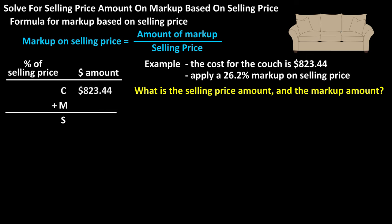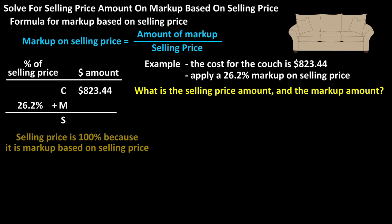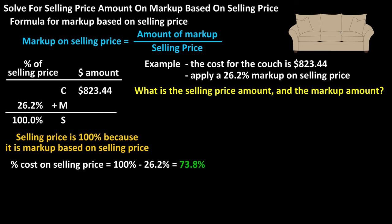We know the cost is $823.44, and we know the markup on selling price is 26.2%. Since it is markup based on selling price, the selling price percent will be 100%. We can also calculate the percent cost on selling price, which is 100% minus 26.2%, giving us 73.8% as the percent cost on selling price, which we can put in the table.